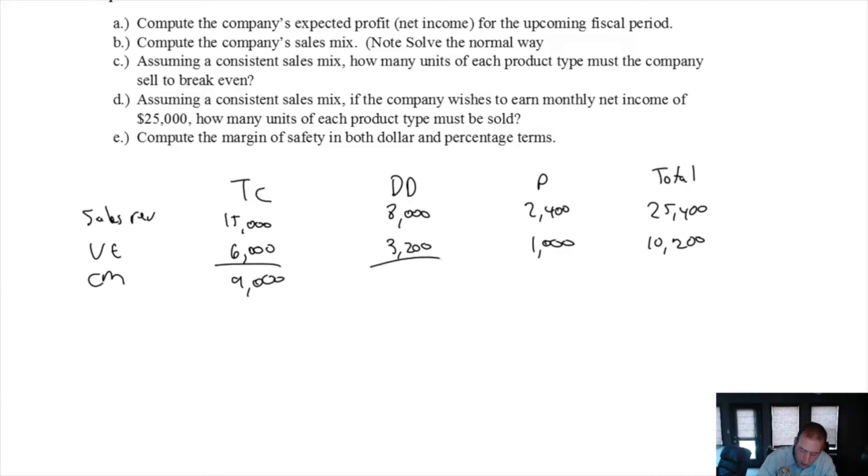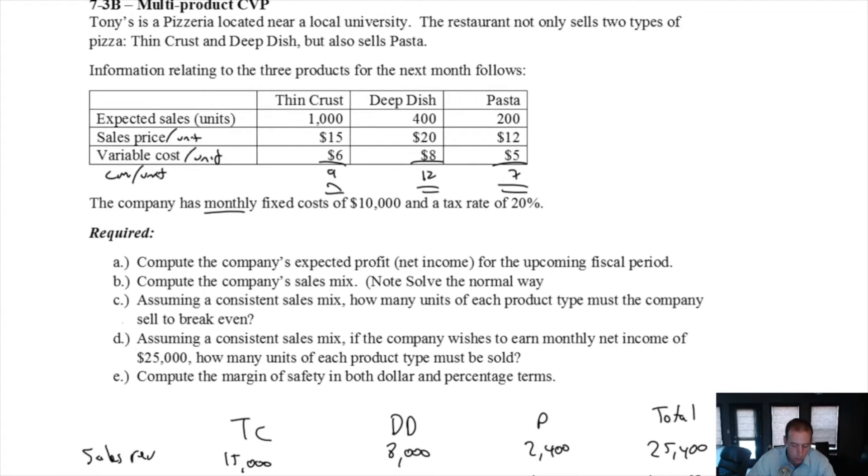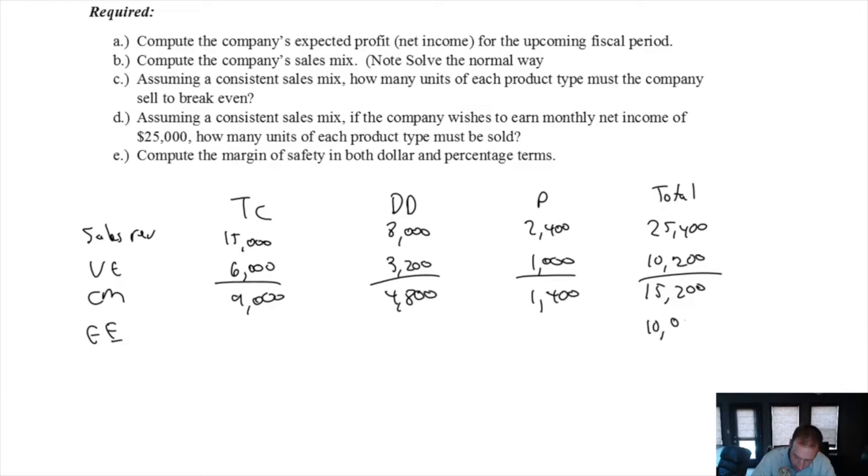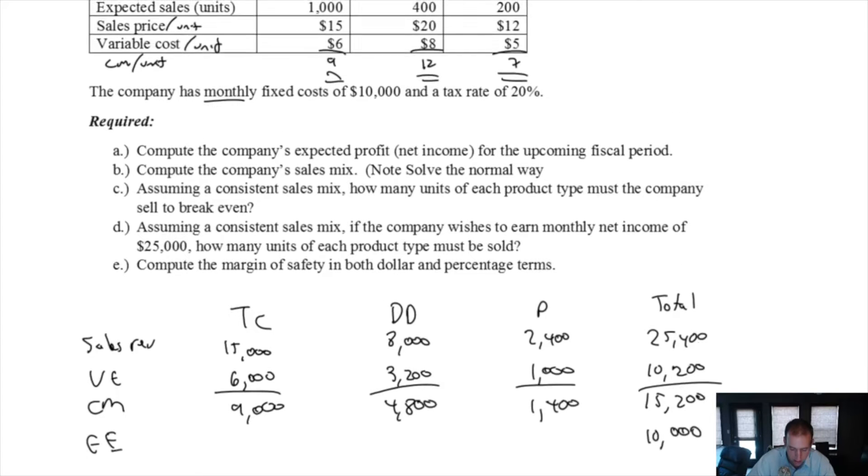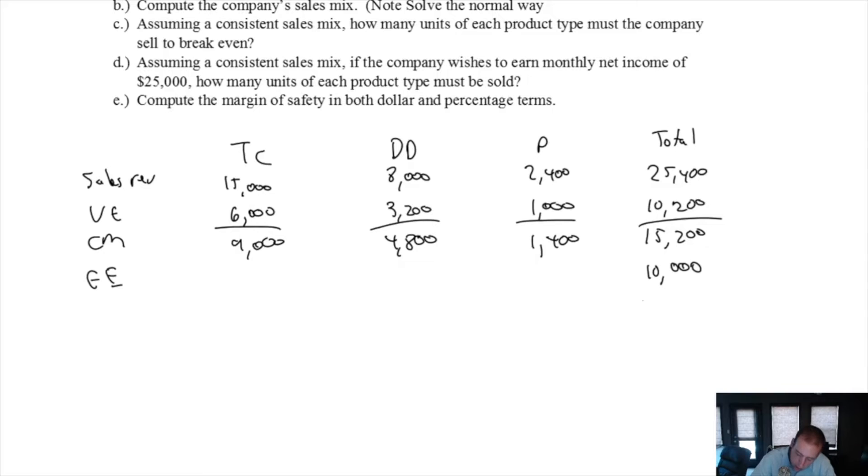That is $10,200 in variable expenses. Our CM then, $15,000 minus $6,000 is $9,000. $8,000 minus $3,200 is $4,800. $2,400 minus $1,000 is $1,400. And total CM is $15,200. Our company's fixed expenses are $10,000. Meaning they have operating income of $5,200. Their income taxes are 20%, which is $1,040.